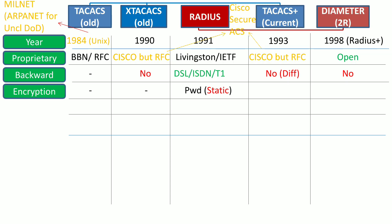RADIUS has a vulnerability in that only the passwords are encrypted, not the username and other authentication data. Moreover, the passwords are static. TACACS+ encrypts all the authentication information including passwords and usernames, and it also uses one-time passwords instead of the static passwords which is the case with RADIUS. Diameter does not use any encryption of its own, and depends upon TLS and IPSec for encryption.